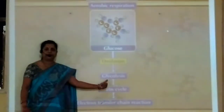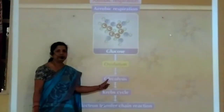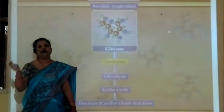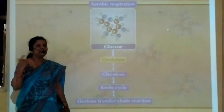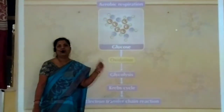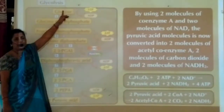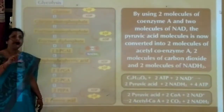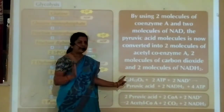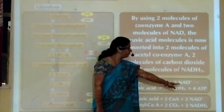The first step is glycolysis. The word 'glyco' refers to glucose, and 'lysis' means splitting or breaking. During glycolysis, the splitting of the glucose molecule takes place. The glucose molecule splits to form 2 molecules of pyruvic acid, 2 molecules of NADH2, and 4 molecules of ATP.